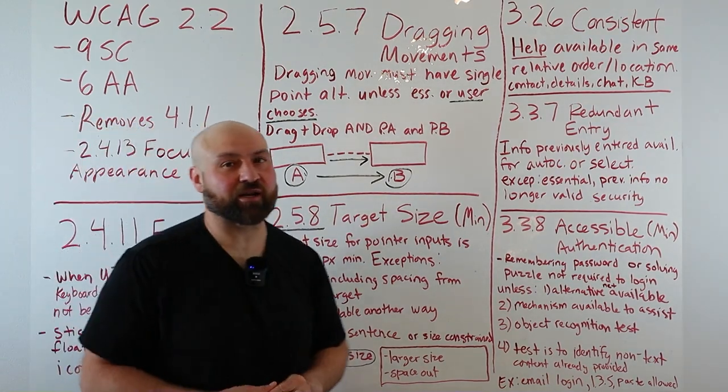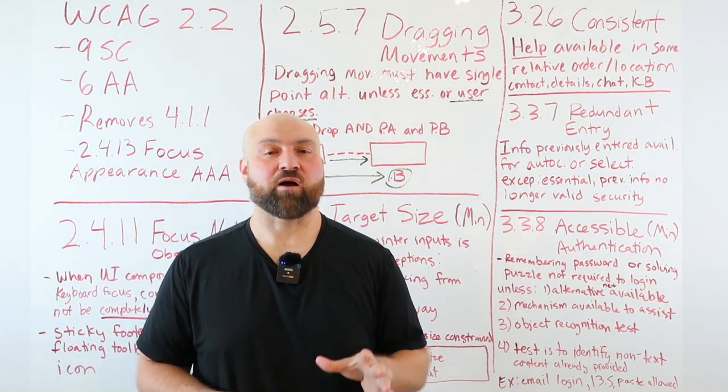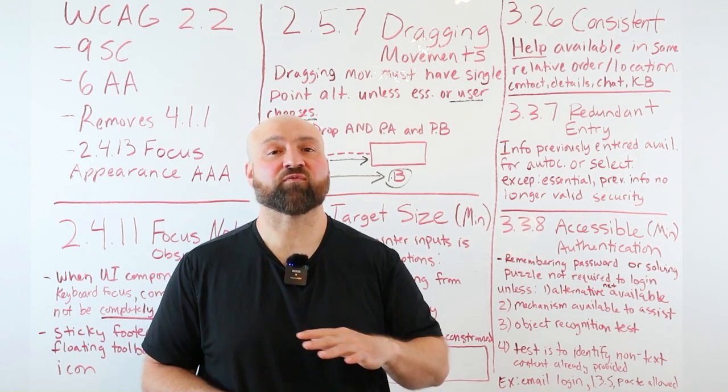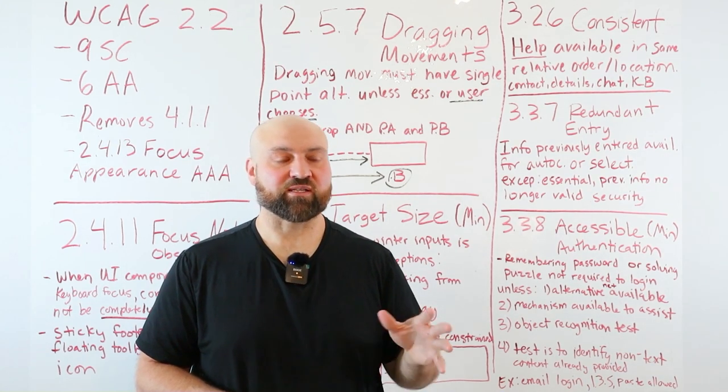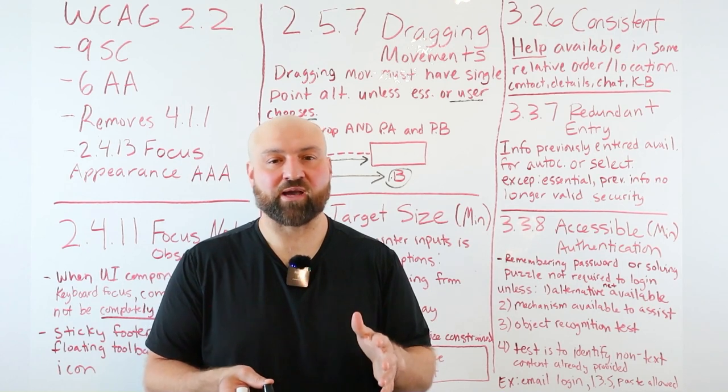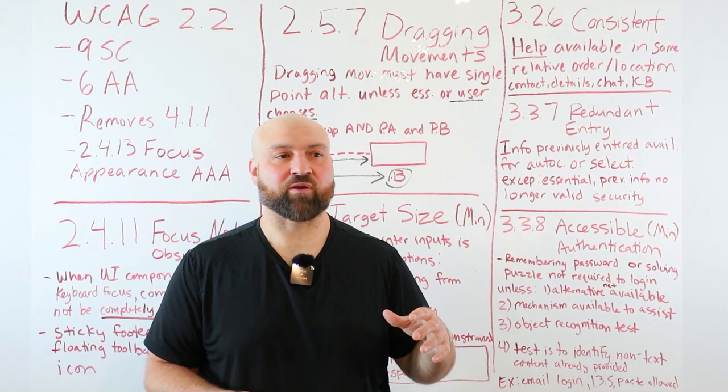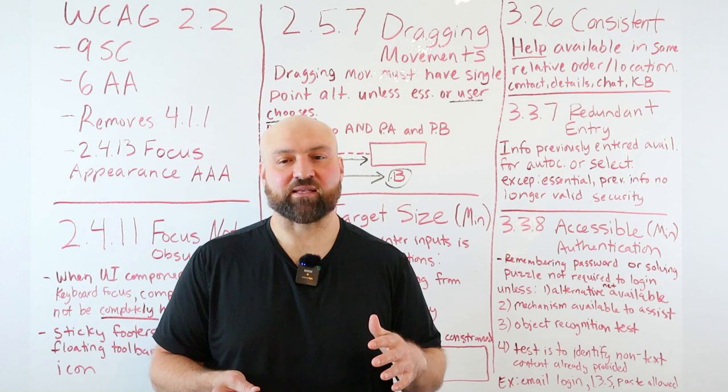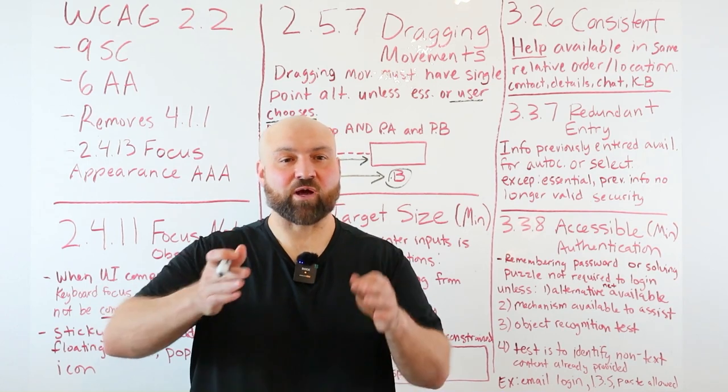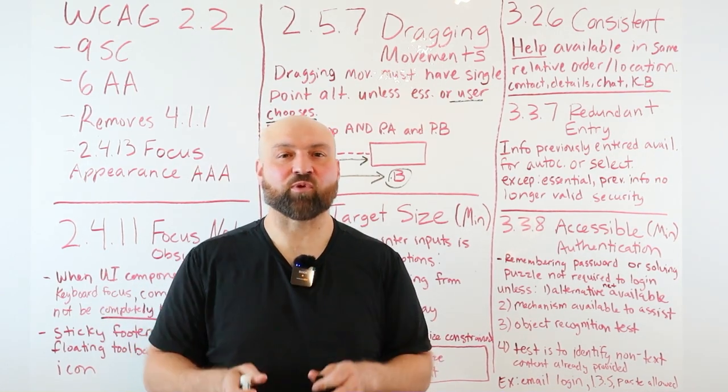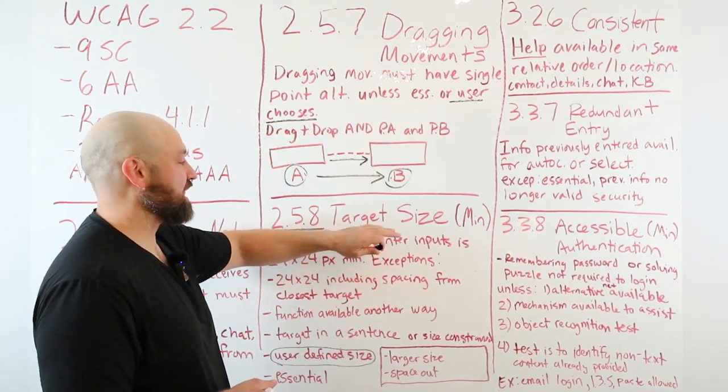This success criterion, and I'm going to link to this one too, I encourage you to go to the official documentation and read how convoluted this gets because it goes far out there. I don't think anyone in the world is actually going through this success criterion trying to find ways they could technically meet it. For example, it gets into whether the icon is shaped, positioned at a diagonal, and whether that diagonal shape can meet the 24 by 24 threshold. It goes really far out.